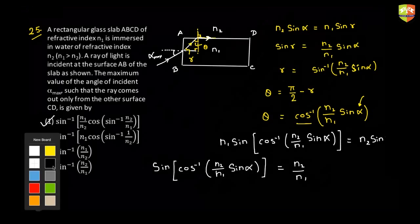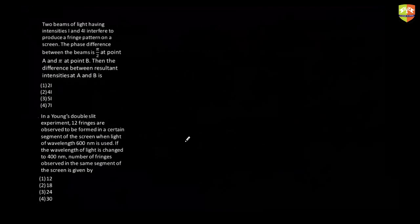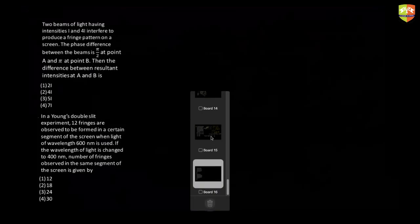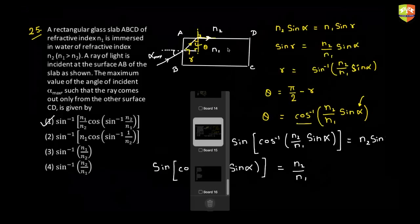The refracted ray passes through CD without total internal reflection. We are assuming that the length AD is very large, so if the ray has any angle with the horizontal it must cross AD — that is the assumption being made.